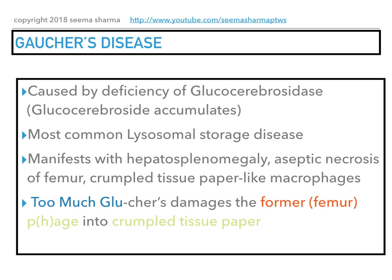My way of remembering this is: 'Too much glue damages the former page into crumpled tissue paper.' Too much glue helps you remember that glucocerebroside is the accumulated substrate. You can also think of it as Goucher's disease. Damages the former helps you remember femur, which is affected by aseptic necrosis. Page or phage into crumpled tissue paper reminds you that macrophages assume a crumpled tissue paper-like appearance, which we call Gaucher cells.